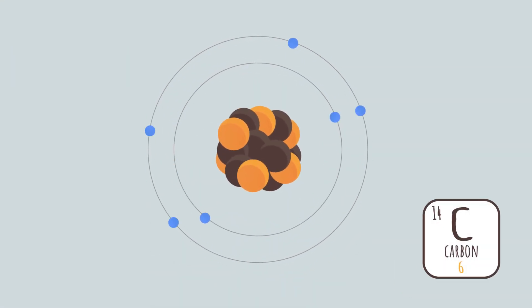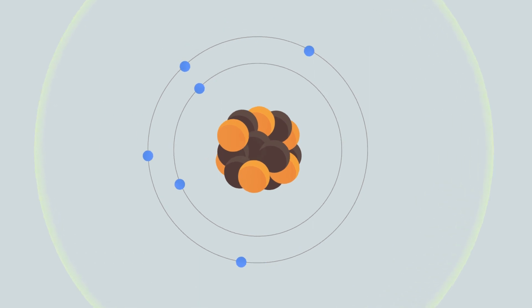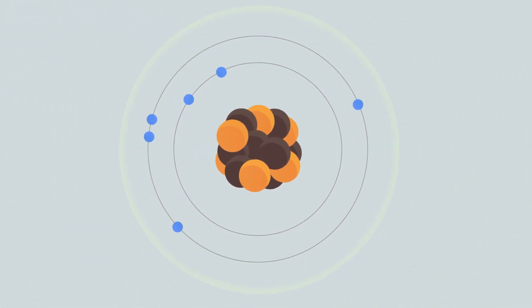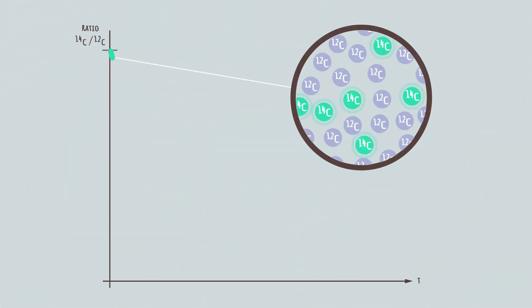Carbon-14 is quite rare, and its nucleus containing six protons and eight neutrons is unstable. The isotope is then said to be radioactive. Its radioactivity decreases slowly and halves every 5,730 years. This is called its half-life.